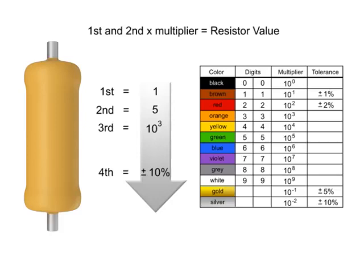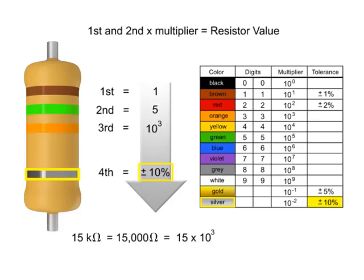Now, let's determine what the bands would be on a 15 kilo-ohm resistor. Since the first digit is 1, the first band would need to be brown. The second digit is 5, so the band color would need to be green. The resistor value is 15,000 ohms, so we need to add three zeros to 15. Three zeros is a thousand, so we need to have a multiplier of 10 to the third. Thus, the third band would need to be orange. The last band would need to be silver to indicate that the resistor has a tolerance of plus or minus 10%.